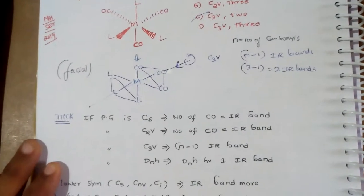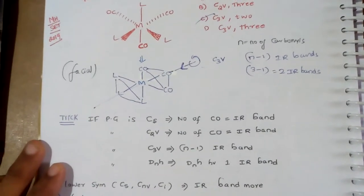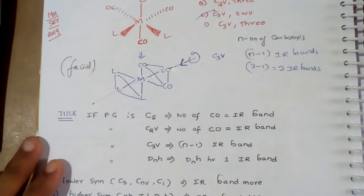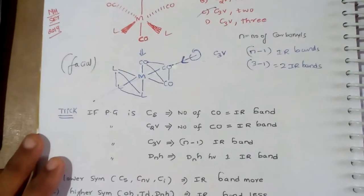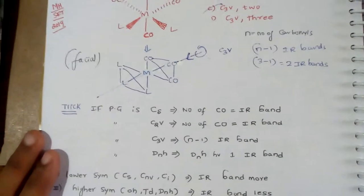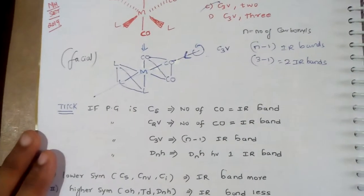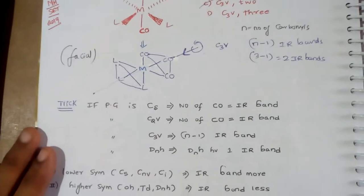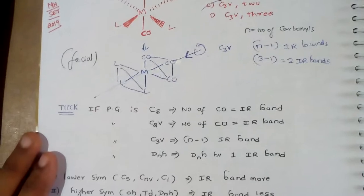If point group is Cs, number of carbonyl groups equals IR bands. For C2V, number of CO equals IR bands. For C3V, it's N-1 IR bands. Similarly for C4V, it's N-2 IR bands. For DNH, we are having only one IR band.